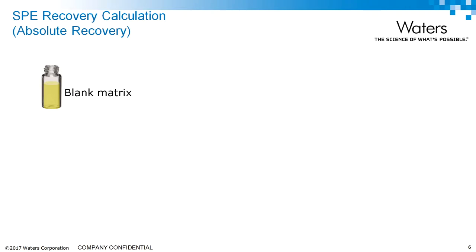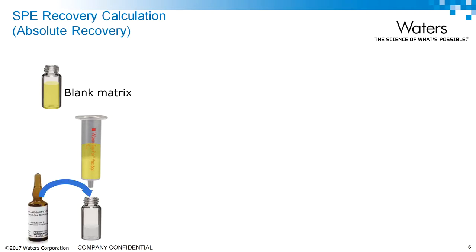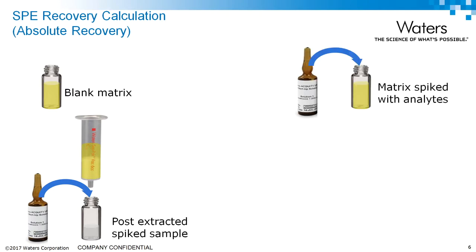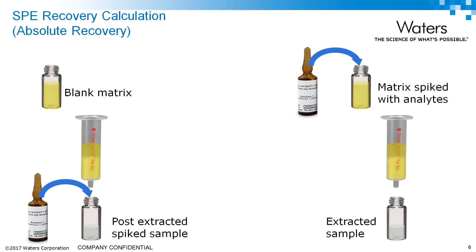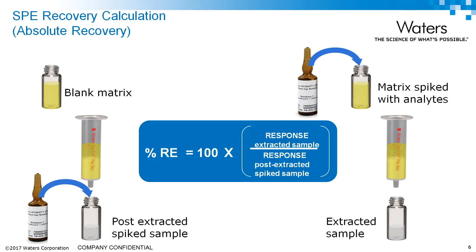One sample is a blank matrix that goes through the SPE, and you add analytes post-extraction — that gives your post-extracted spike sample. The other sample contains the analytes in the matrix from the very beginning, and you take that through the extraction. To calculate recovery, you compare the MS response from the extracted sample to the MS response in the post-extracted spike sample, where there was no opportunity for analyte loss through the SPE device.